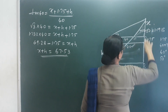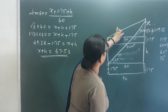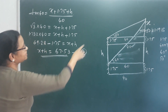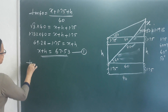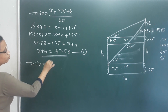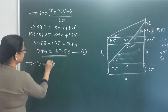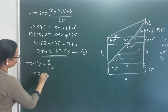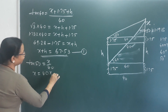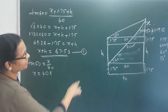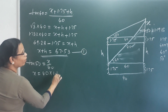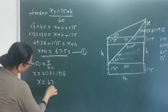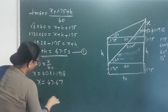So X plus H equals 67.53. For the next triangle, tan 50 equals opposite side X divided by 40, so X equals 40 times tan 50, which is 1.1918. Therefore X equals 47.67.